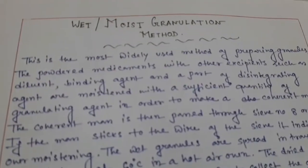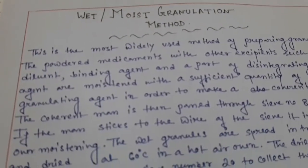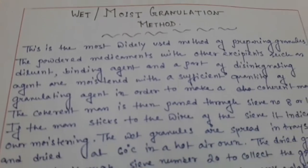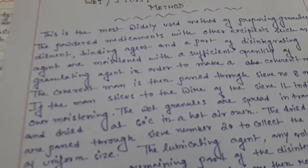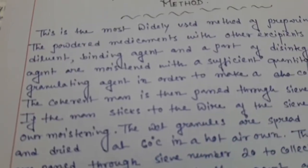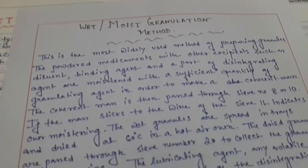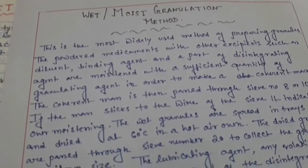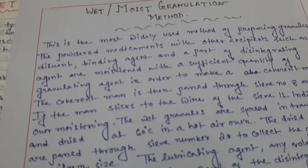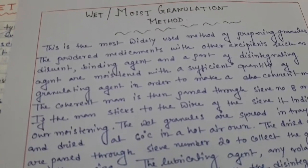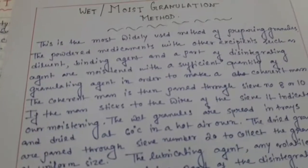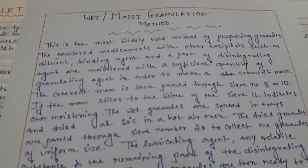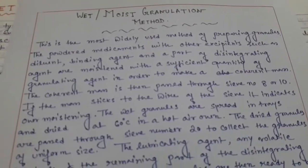Hello friends. Today I am discussing the tablet chapter. Tablet is a very important part of the solid dosage form. There are different types of methods used for making tablets, such as wet or moist granulation method, dry granulation method, and direct compression method. Today I am discussing different types of important questions from the tablet chapter.